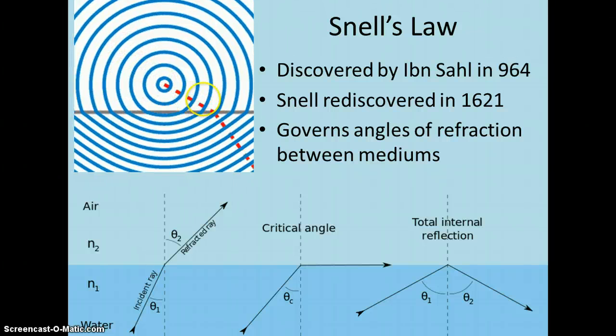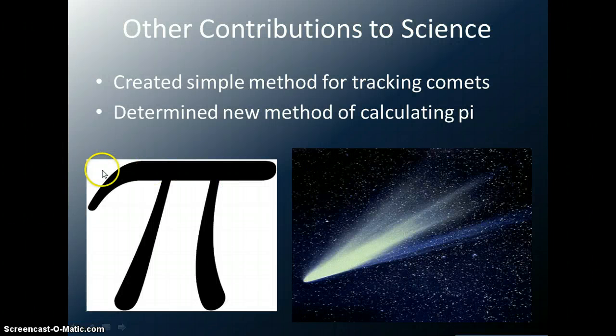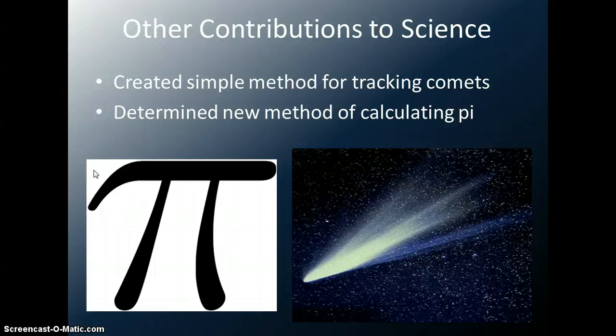Of course, Snell made other contributions to mathematics as well. For instance, he created a simple method for tracking comets. It was based off his method for triangulation, and ultimately made it much easier to determine the distance and direction that a comet had traveled.